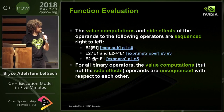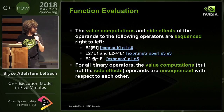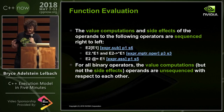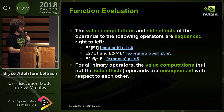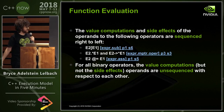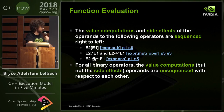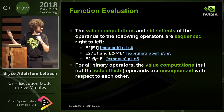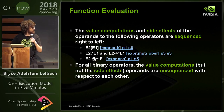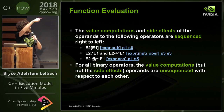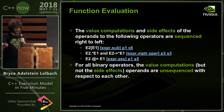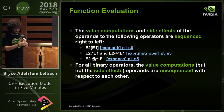The value computations and side effects of the operands to the following operators are sequenced right to left. For all other binary operators, excluding && and ||, the value computations but not the side effects are sequenced before the operator evaluation, but the side effects are not.